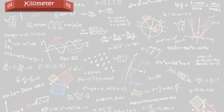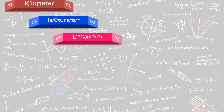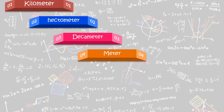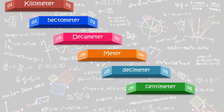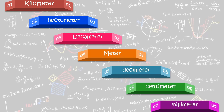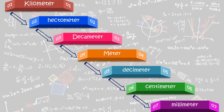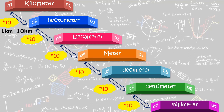These are: kilometer, hectometer, decameter, meter, decimeter, centimeter, and millimeter. As we start converting from kilometers to millimeters, we need to multiply by 10 at each step. That is, one kilometer is equal to 10 hectometers.